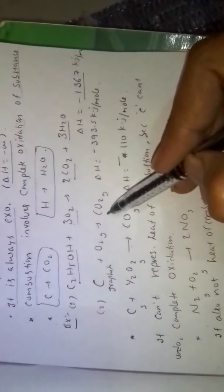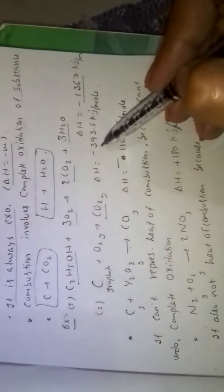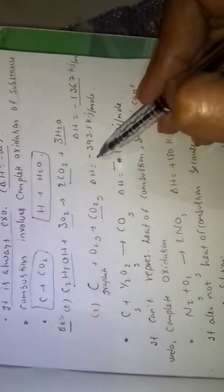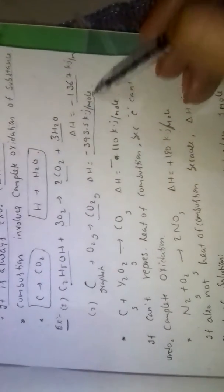Carbon on combustion gives CO2, delta H value minus 393.5 kilojoules per mole. If C converted to CO,